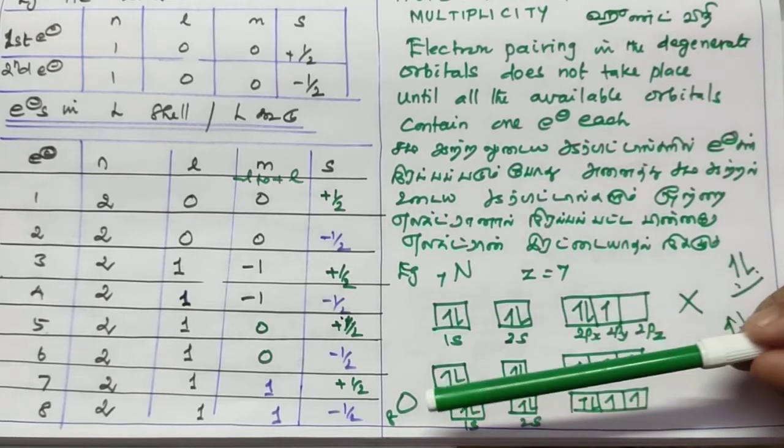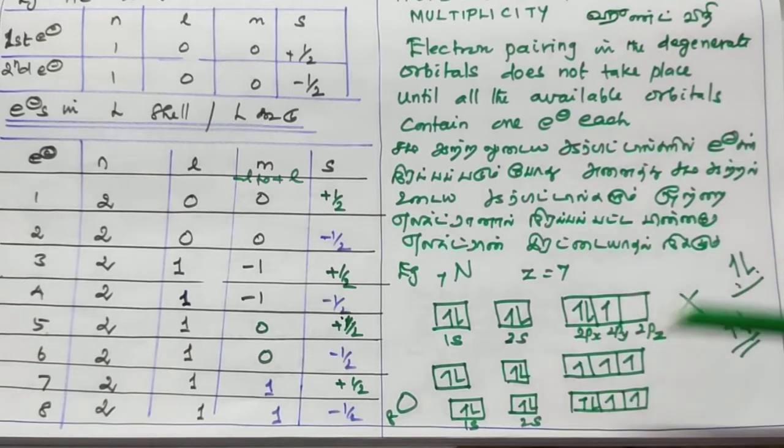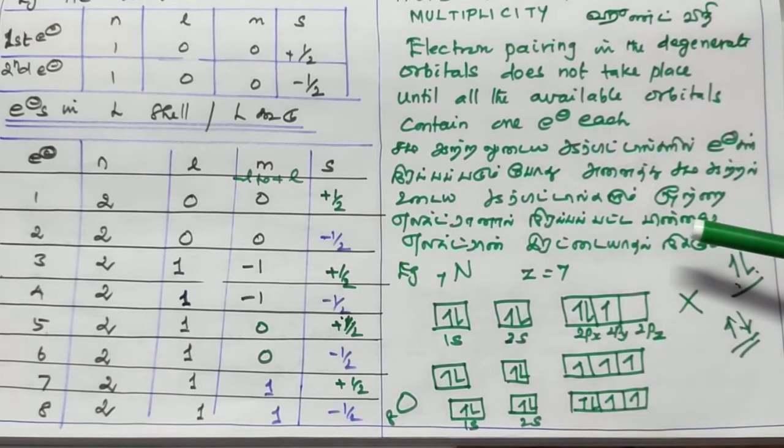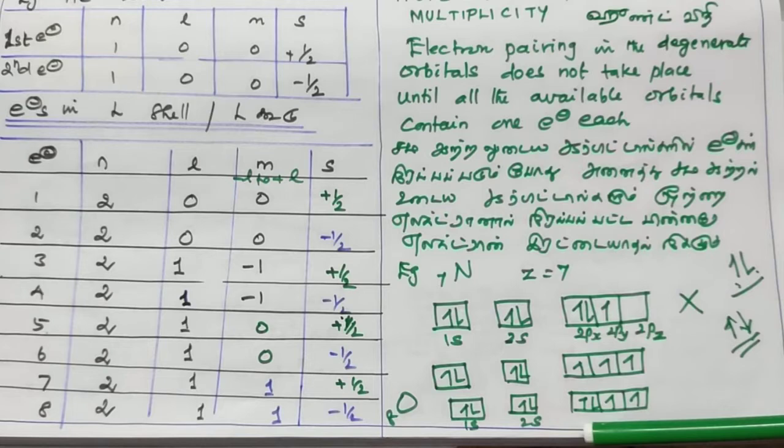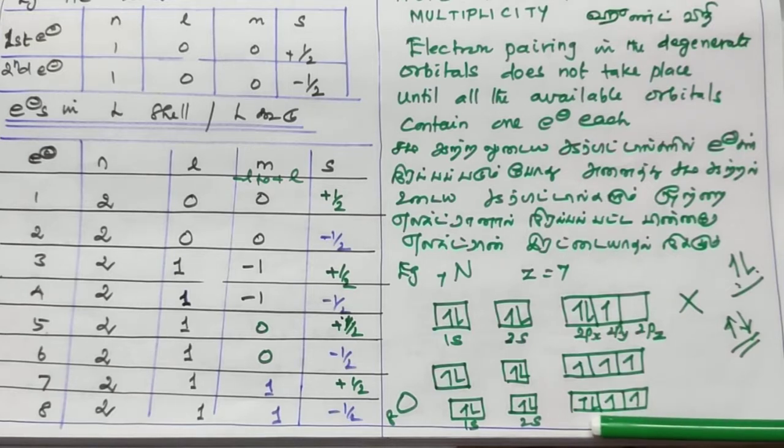Oxygen. Oxygen is atomic number 8. How many electrons are there? 8 electrons are there. 1s2, 2s2, 2px2, 2py1, 2pz1. One electron is there. Now, pairing is allowed. Why pairing is allowed? Because all orbitals contain one electron each.